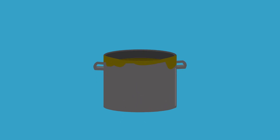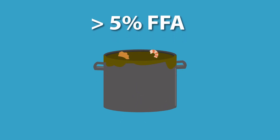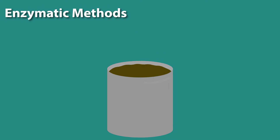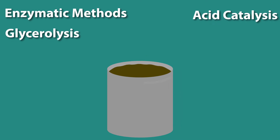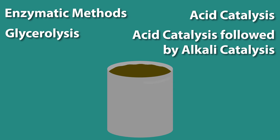When working with feedstocks that contain 5% FFA or higher, it is important to convert the FFAs to biodiesel, where the process yield will be low. There are at least four techniques: enzymatic methods, glycerolysis, acid catalysis, and acid catalysis followed by alkali catalysis.